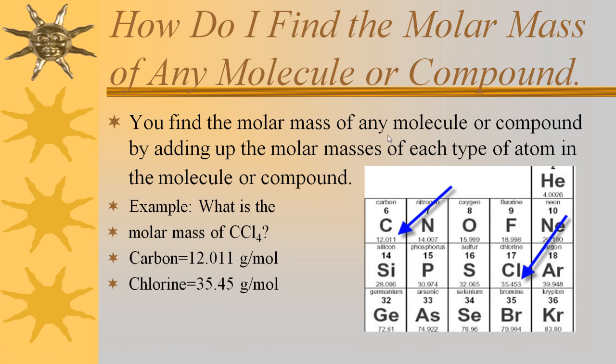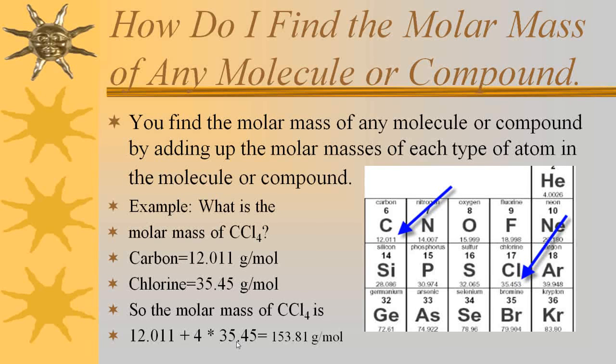So remember, the way that you find the molar mass of the compound is to add up the molar mass of each type of atom. We have one carbon in here, according to the chemical formula, and four chlorines. So I'm going to add the carbon, which is 12.011, plus the four chlorines. So basically, I take four and I multiply it times the molar mass of chlorine, which is 35.45. I add it to the molar mass of carbon, and I get 153.81 grams per mole.